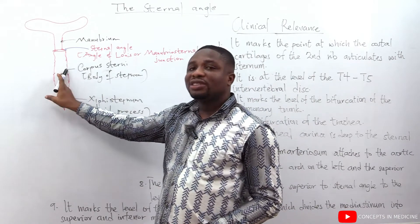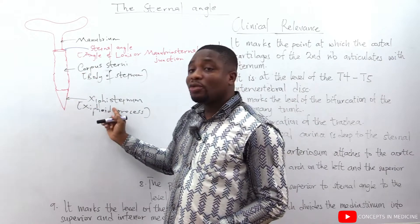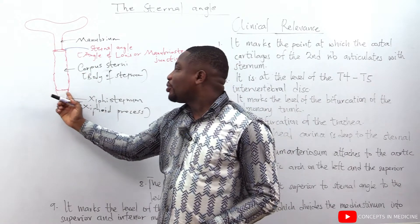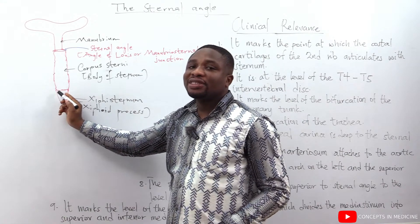If you look at the corpus of the sternum, that's corpus sterni or the body of the sternum and the xiphoid sternum, what we call the xiphoid process, they meet at a point where we call it the xiphisternal joint. This which you see here is what we call a xiphisternal joint.